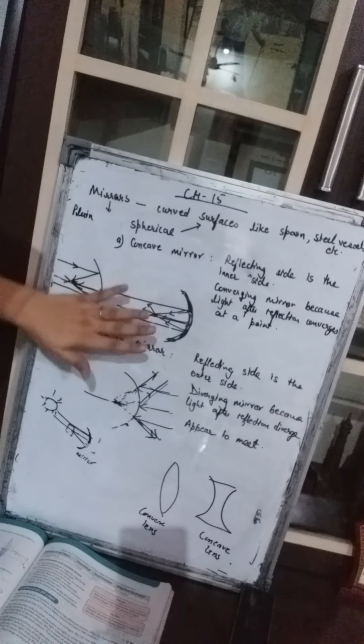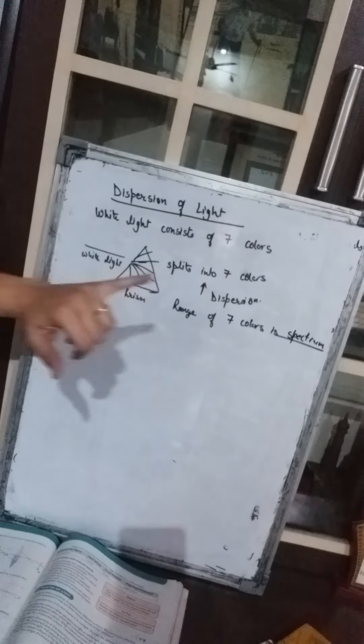Now we come to the dispersion of light. White light, or simple sunlight which appears white, consists of seven colors. When we make white light pass through a glass prism, it splits into seven colors — we can see all seven. This splitting of white light into seven colors is called dispersion. The complete range of seven colors is called the spectrum. You can see in the diagram that white light passes through a prism and gets dispersed into the seven colors of VIBGYOR, as seen in a rainbow.